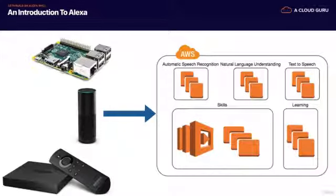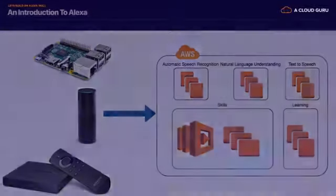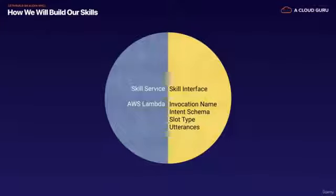Alexa uses a whole bunch of different technologies: automatic speech recognition, natural language understanding, and text to speech. That allows you to create all these different skills through developer.amazon.com. If you are going to do this lab, you'll need to set up an account there, using the same email address you use for your Amazon Echo. We always start with a skills service, which is our Lambda function, then we build our skill interface consisting of the invocation name, intent schema, slot types, and utterances. We do have a full Alexa course on the aCloudGuru platform.